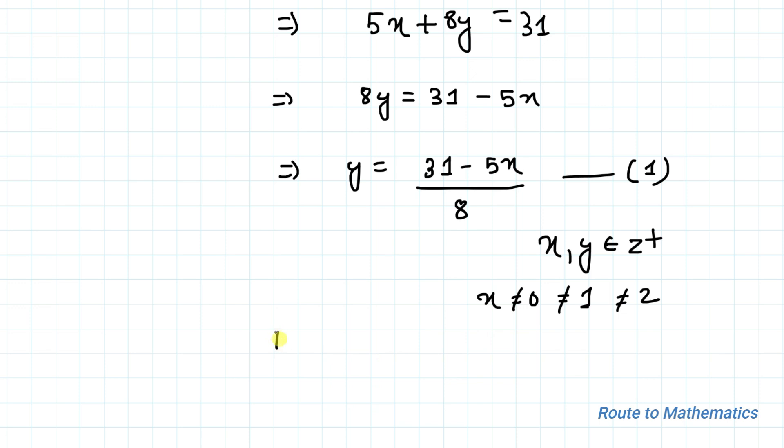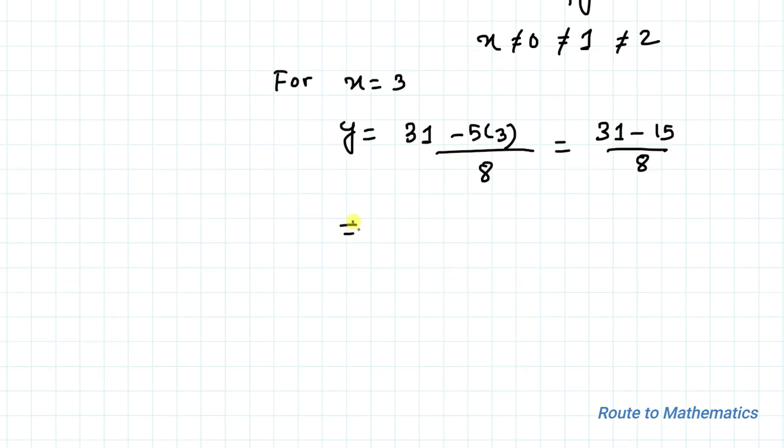Now for x = 3, we have y = (31 - 5×3)/8, which equals (31 - 15)/8. So from here we have y = 2.